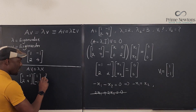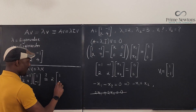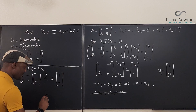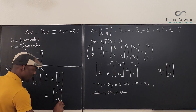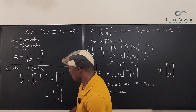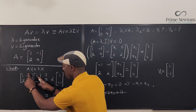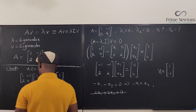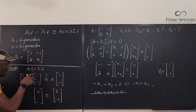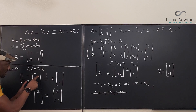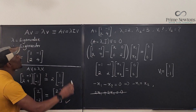The right-hand side: 2 × [1; -1] = [2; -2]. Now the left-hand side: A·v₁ = [1,-1;2,4] × [1;-1]. First entry: 1(1) + (-1)(-1) = 1 + 1 = 2. Second entry: 2(1) + 4(-1) = 2 - 4 = -2. So A·v₁ = [2; -2]. Both sides match!